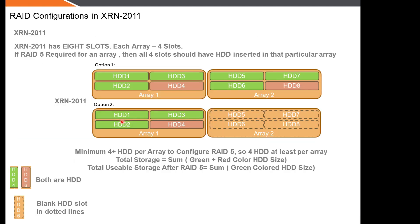In this slide we will see an example configuration — what is allowed and what is not allowed. The XRN-2011 is an NVR with eight slots that supports RAID 5. You have an option to fill up each array with four hard disks: 1, 2, 3, 4. RAID array 2 also has four hard disks. This is a supported configuration.